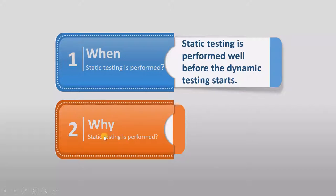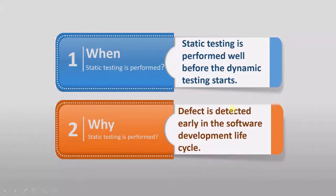Why is Static Testing performed? Defects are detected early in the software development lifecycle. If you perform Static Testing, you detect defects early, fulfilling one of the key testing principles: if you find a defect early, it is cheaper to fix. That is why almost all organizations include Static Testing in their complete testing process — to find defects early and reduce fix costs.